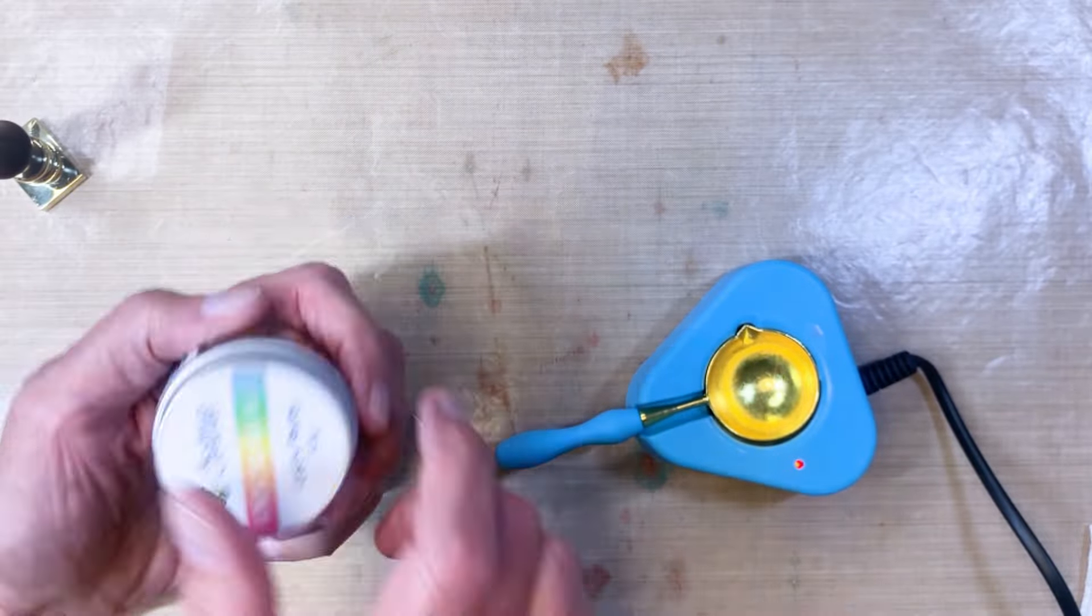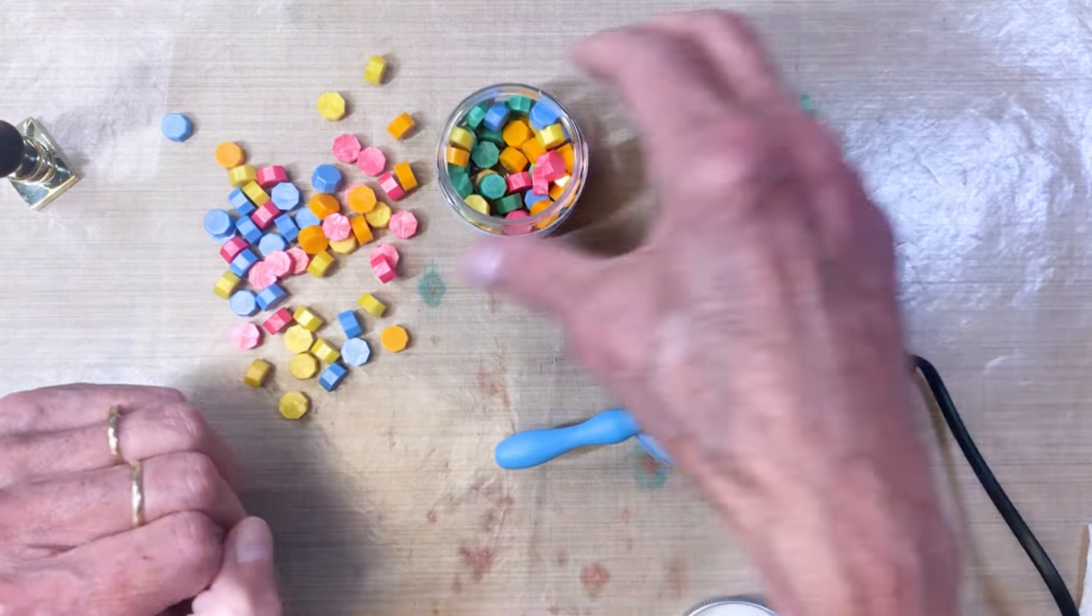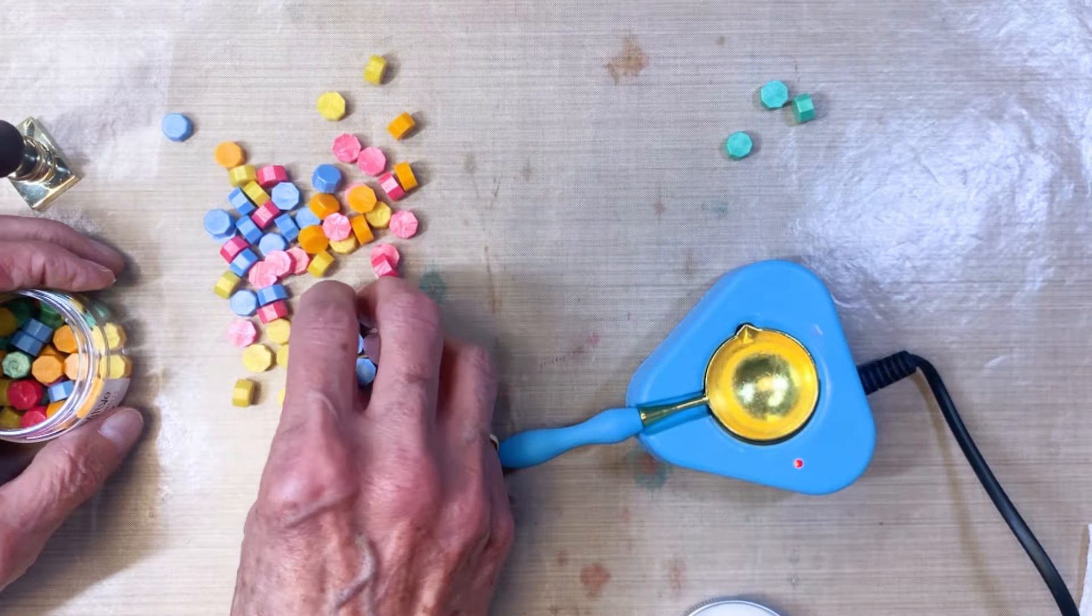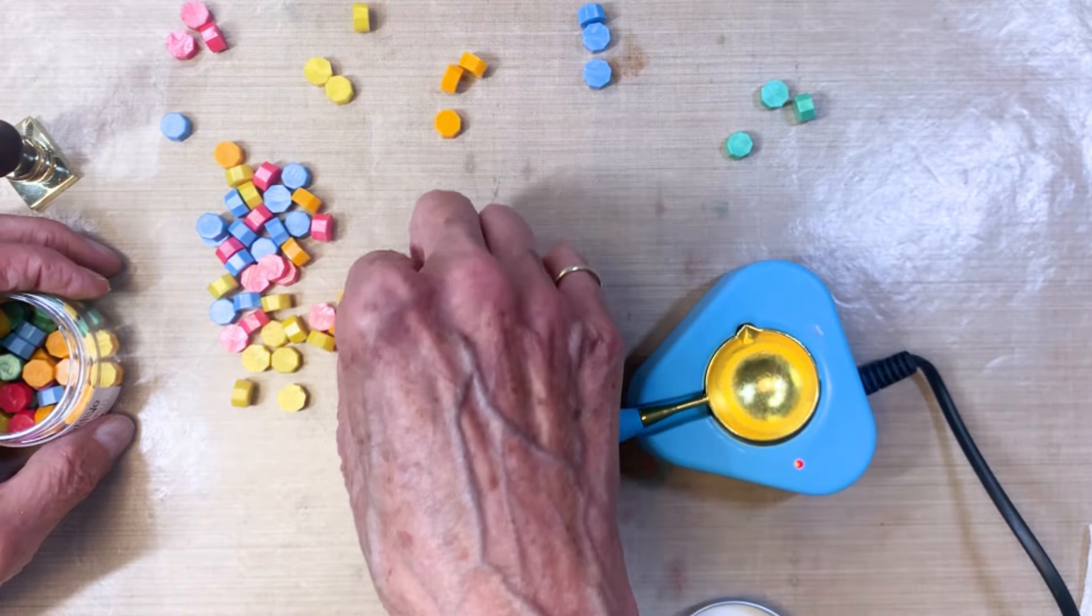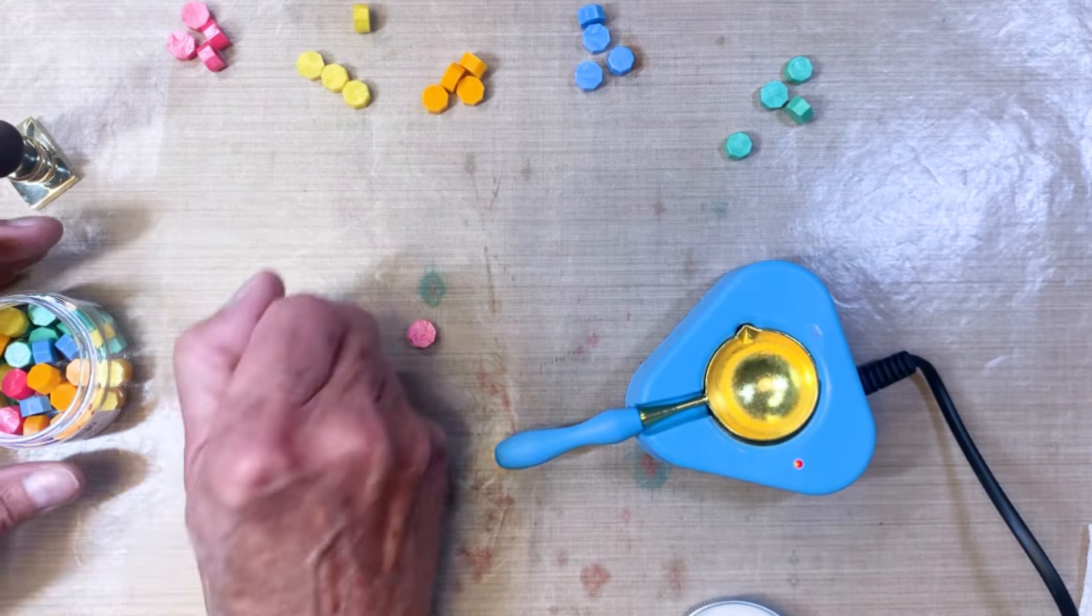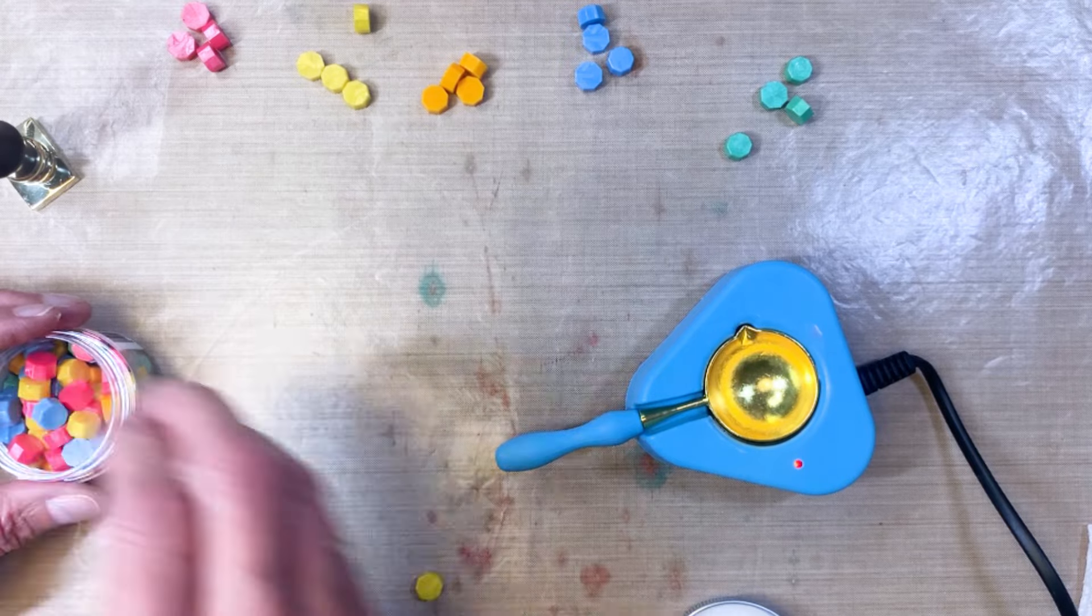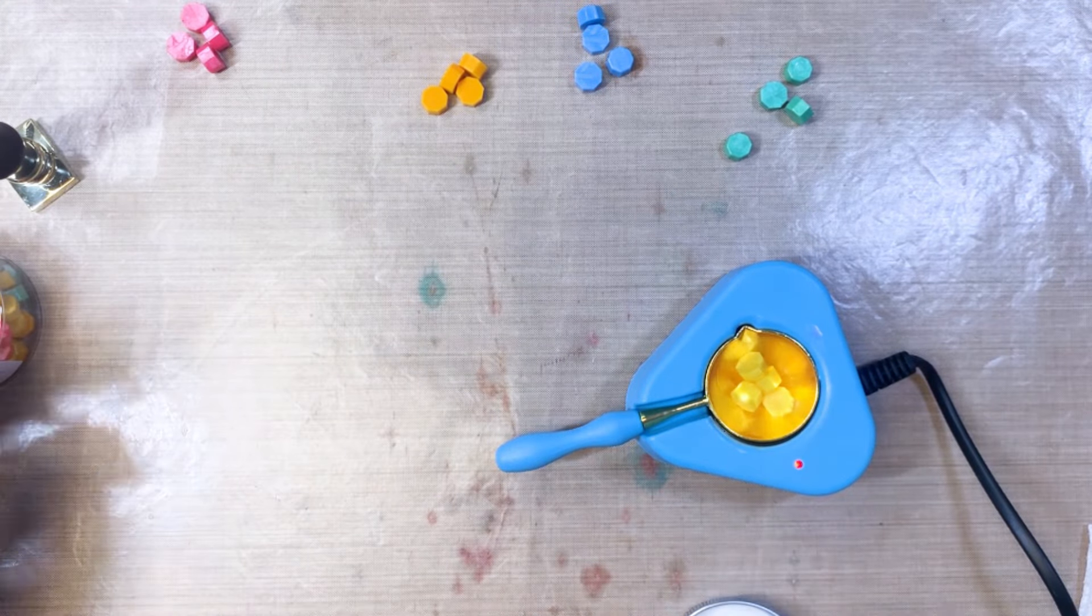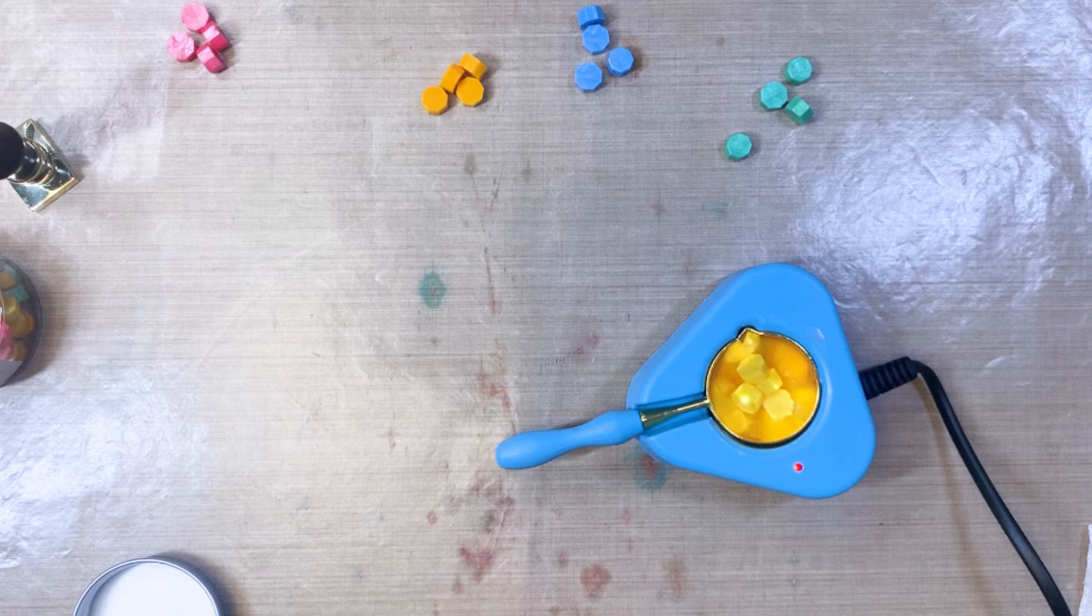The next thing I did was I pulled out the Honeybees wax melts let's celebrate. I pulled out four each of five different colors and what I'm planning on doing is making balloons out of the wax seals using the let's celebrate wax impression tool from Spellbinders.